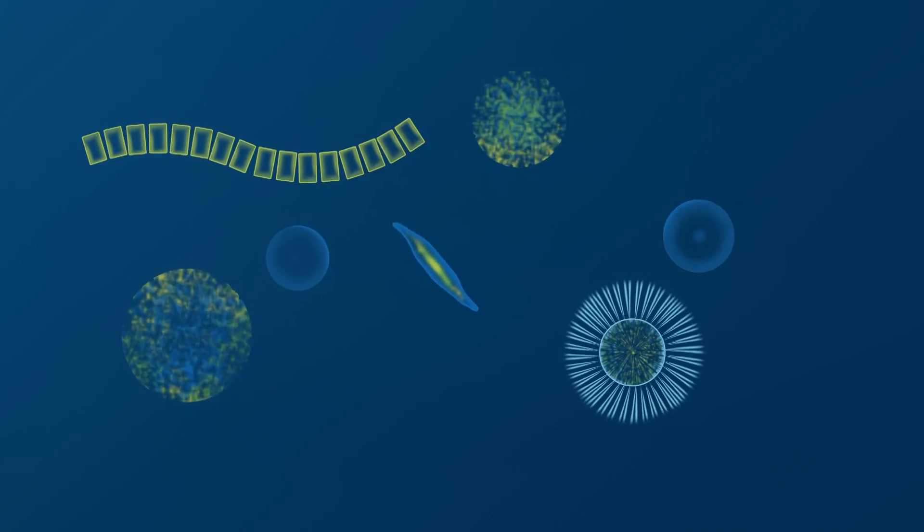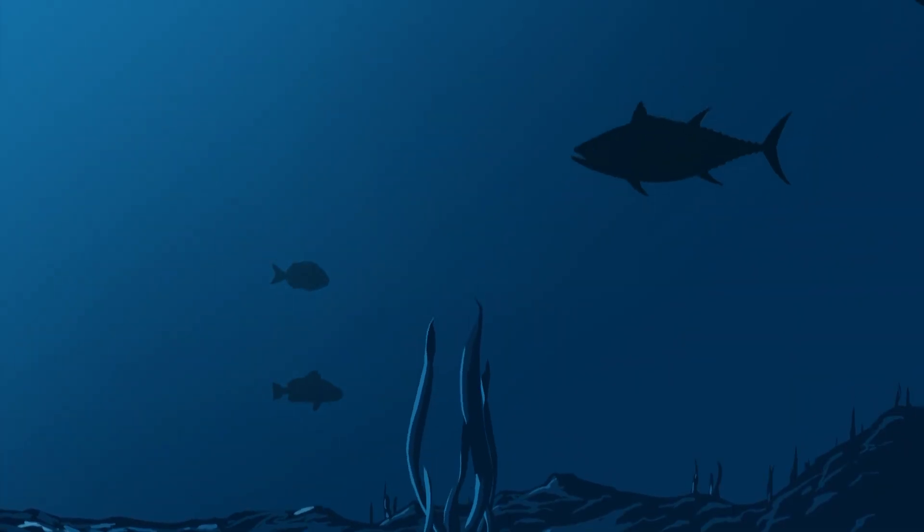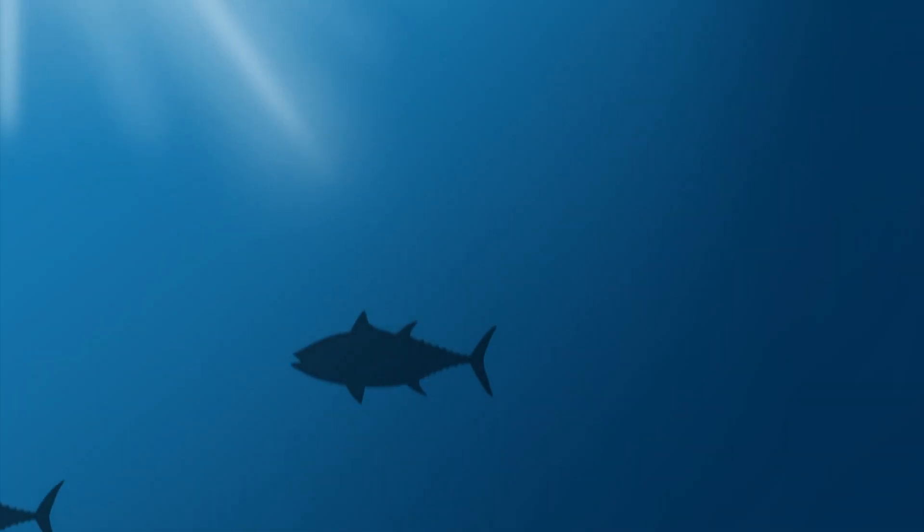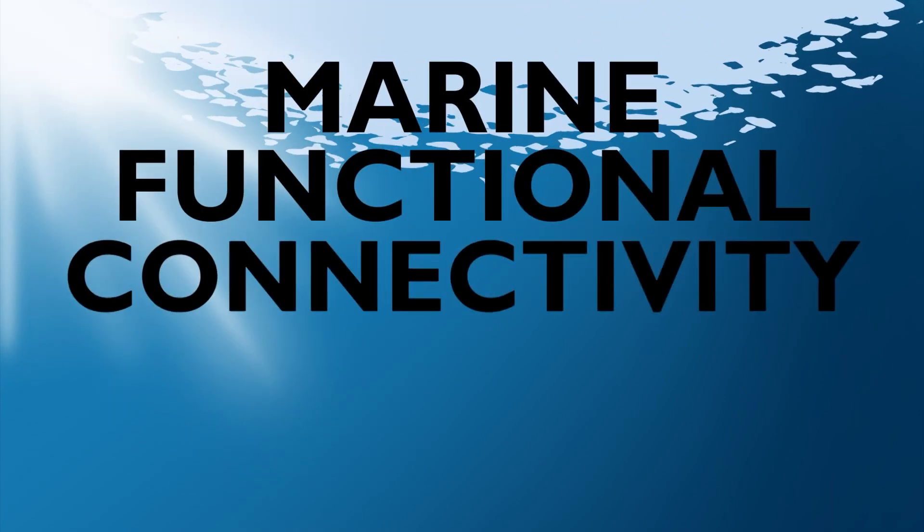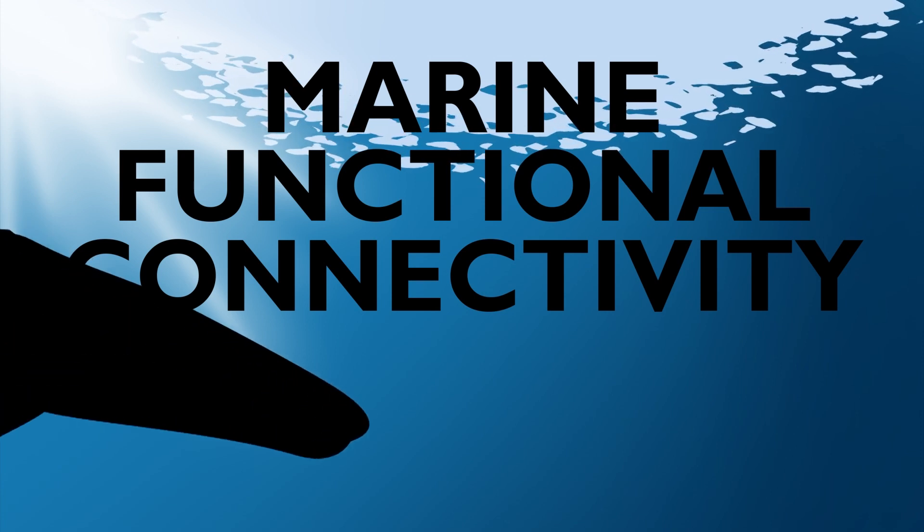From the drift of tiny floating plankton to the migrations of large predators like tuna, sea turtles and birds across oceans, marine functional connectivity describes all the movements of all marine organisms throughout their lives.